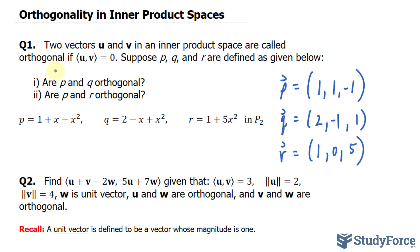Now we're told right in the question that the inner product of two vectors u and v, when it's equal to zero, then they are orthogonal. Orthogonal means at right angle to each other.